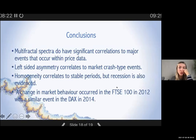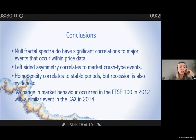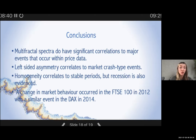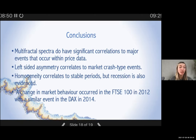To conclude, we have confirmation that multifractal spectra do indeed have the capacity to elucidate major economic events within financial time series data. There is also reason to hypothesise that left-sided asymmetry in F-alpha curves could be an indicator of qualitative symptoms of market failure, such as inefficiency, liquidity, and bubbling. It's clear from the results that stock market crashes are particularly heralded by left-sided asymmetry, and the continuation of left skew into the present day shows we're still in the midst of a crash, or at least in the fallout from one.